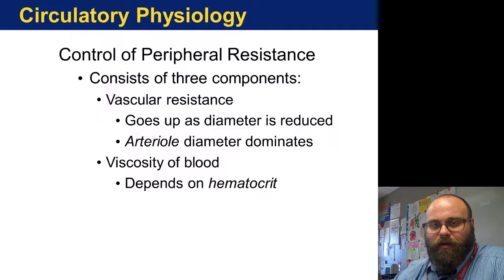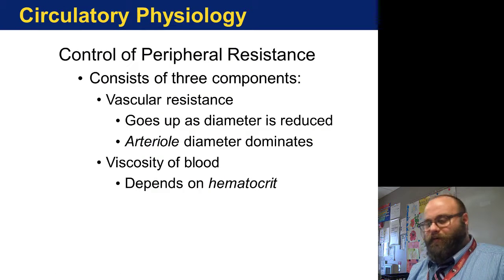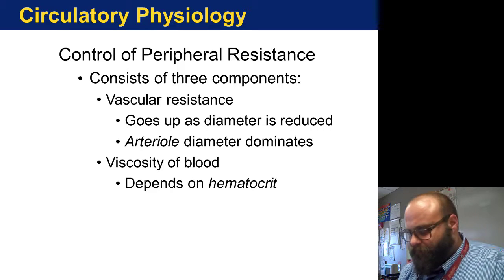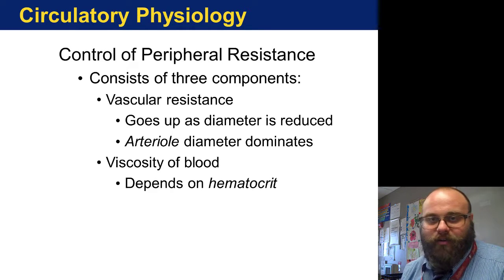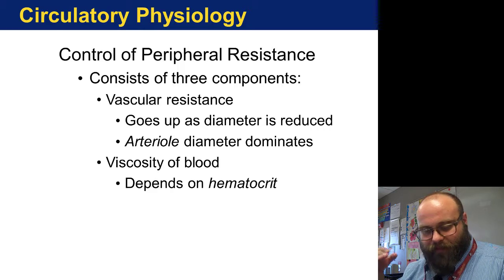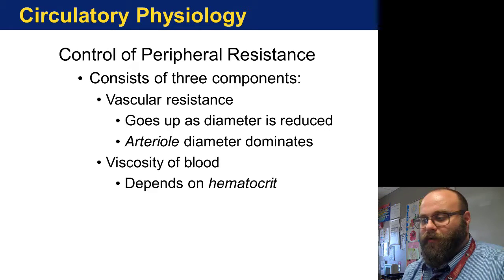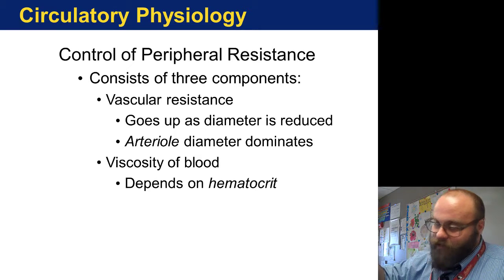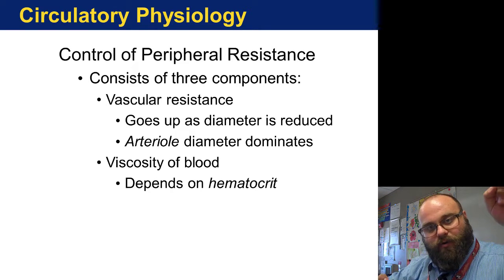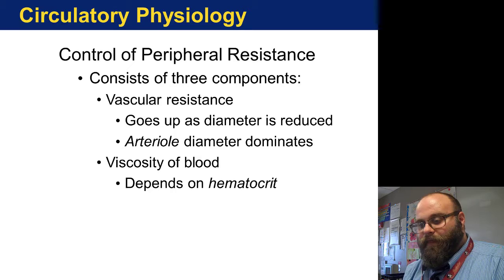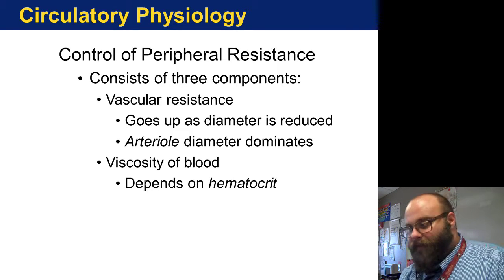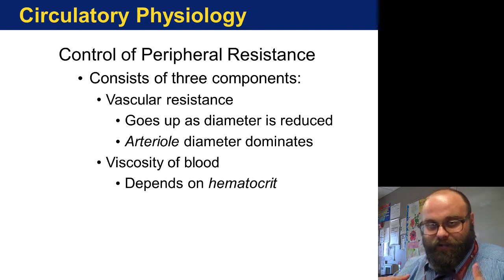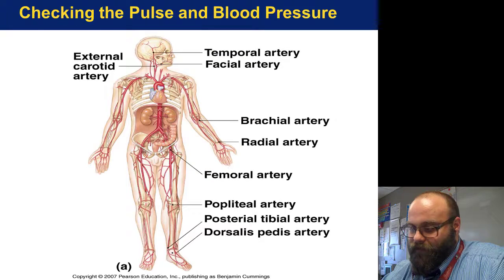Another factor that can affect blood flow is the diameter of your blood vessels — this is called vascular resistance: how much are your blood vessels resisting the blood flowing through them. Think about a hose: if you put your thumb over the top of the hose, it's more difficult for water to travel through. The easier it is for blood to flow through your body, the more able blood is to get to the parts of your body that need it.